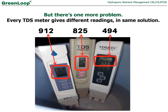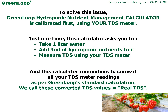But there's one more problem: every TDS meter gives different readings in the same solution. This image speaks everything — 912, 825, 494 — in the same hydroponic solution using three different TDS meters.